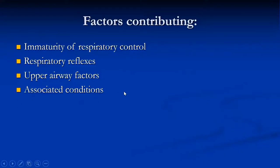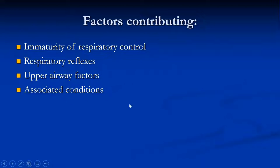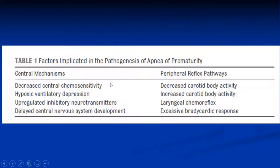So what are the factors contributing? This is one area I will go into a little bit of detail so everyone understands the basic respiratory physiology. We have immaturity of the respiratory control as a predominant factor in central apnea. The respiratory reflexes play a role in both central and obstructive apnea, and the upper airway factors play a role mainly in obstructive apnea. We also have associated conditions.